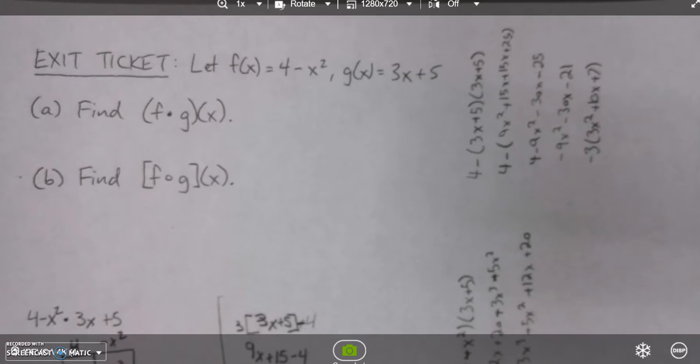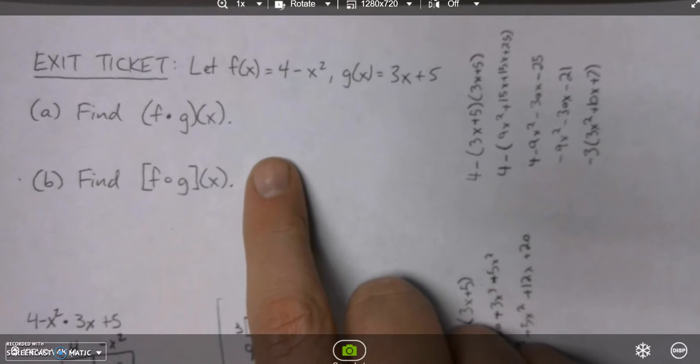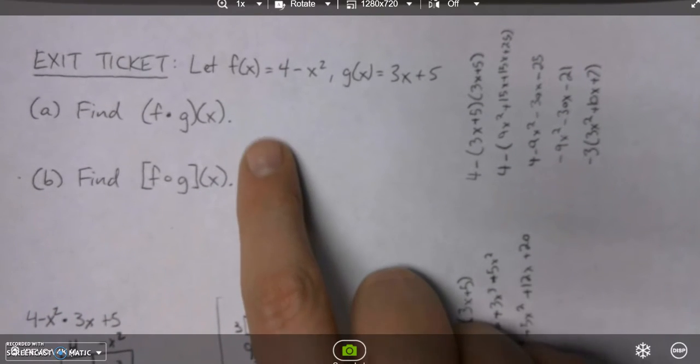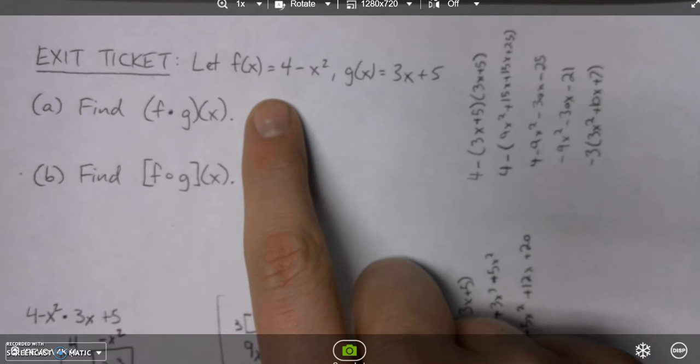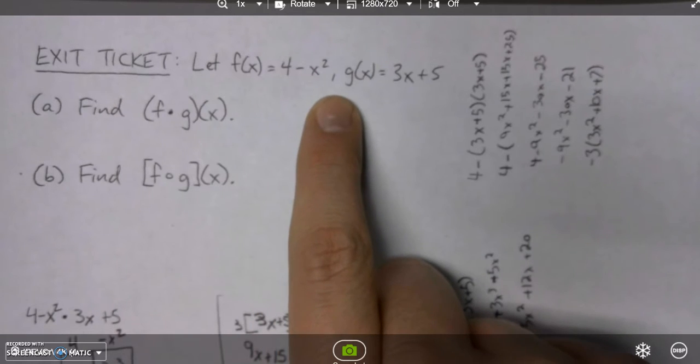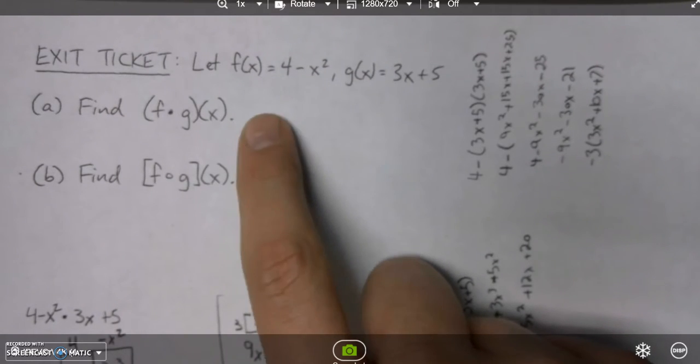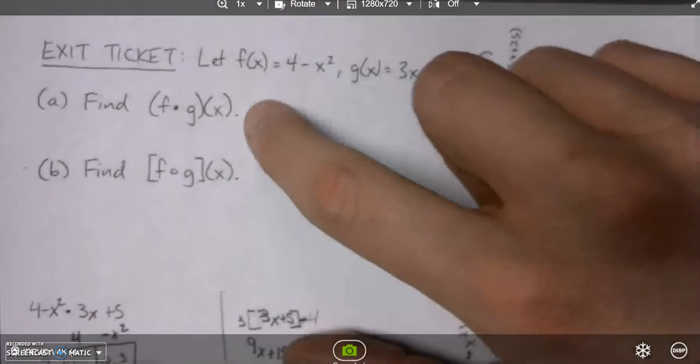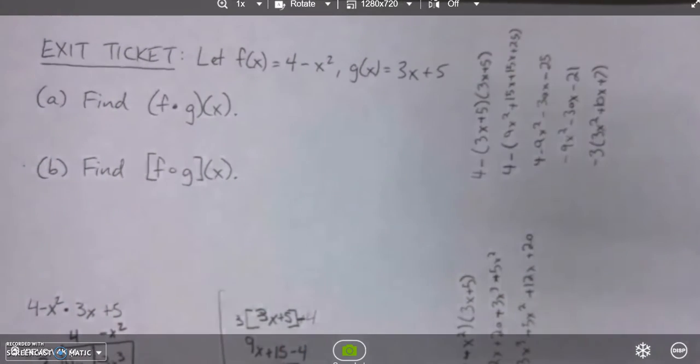Panthers, we're going to start with the thing I would ask you to start with, even if I were here. On Monday, right at the end of class, you guys worked on this exercise on index cards. You said let f(x) be the function 4 minus x squared and let g(x) be 3x plus 5. Ask you to find two things. Panthers, ask you to find the product f times g of x, and ask you then to find composition of functions f of g of x.